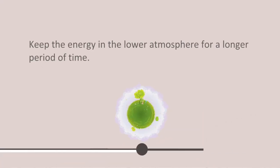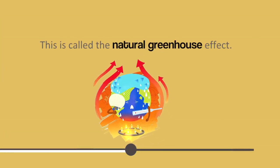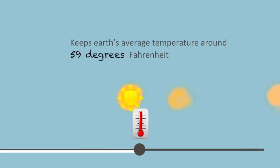This process keeps the energy in the lower atmosphere for a longer period of time, making the earth warmer than it would be otherwise. This is called the natural greenhouse effect and keeps the earth's average temperature around 59 degrees Fahrenheit.